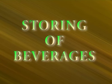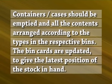Let us now move to the third objective, storing of beverages. Alcoholic beverages are highly susceptible to pilferage. The key to the cellar must be carefully monitored; one of the control procedures is to change the locks often. Containers or cases should be emptied and all the contents arranged according to the types in the respective bins. The bin cards are updated to give the latest position of the stock in hand. Containers or cases are kept in a separate area so that containers are not used to hide bottles.